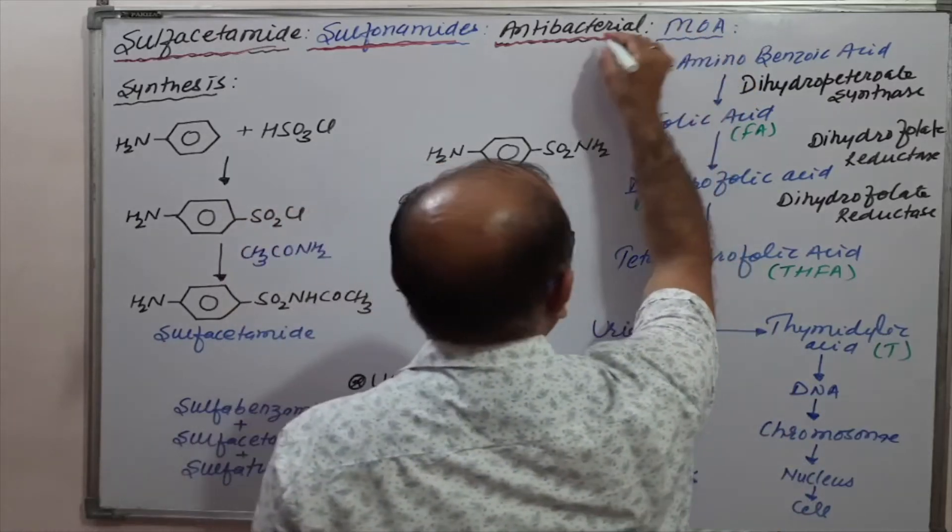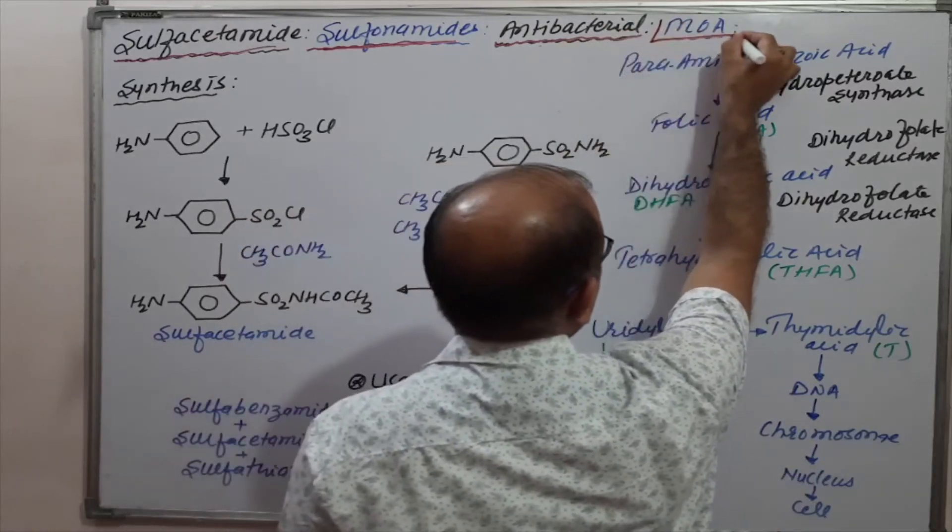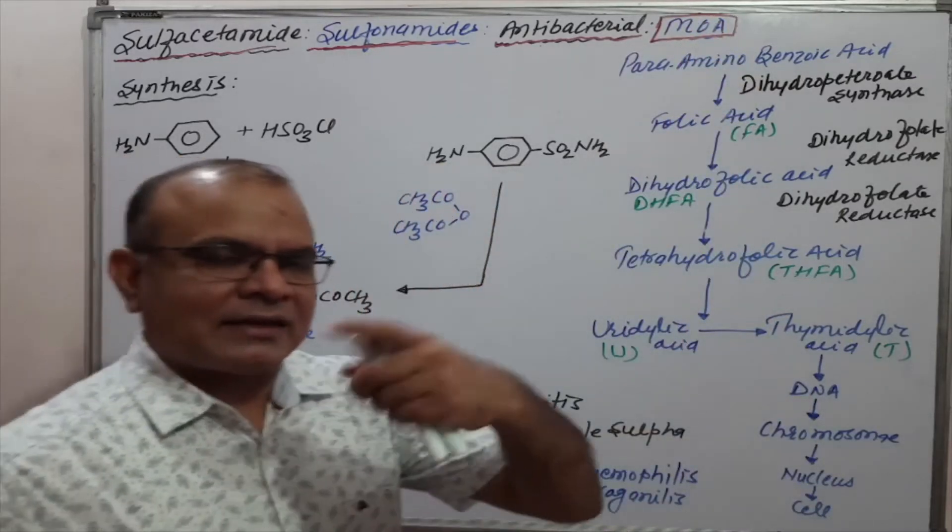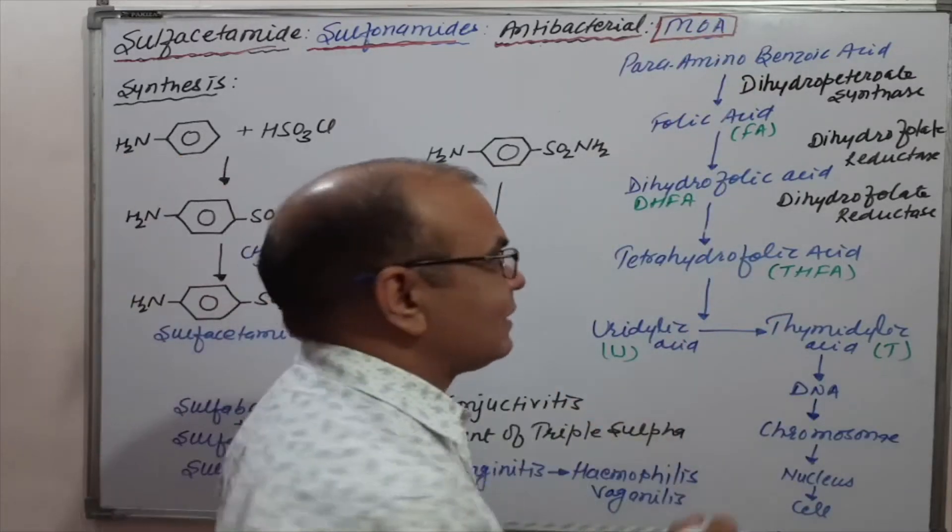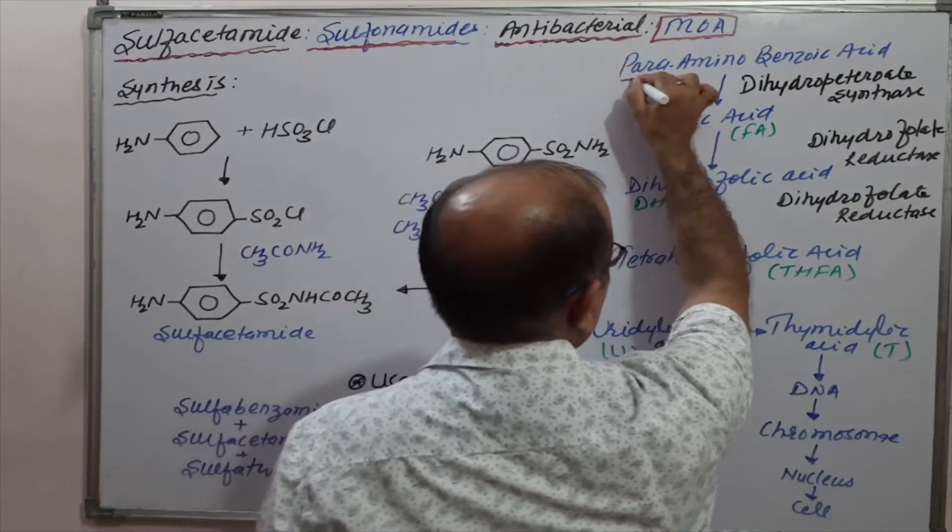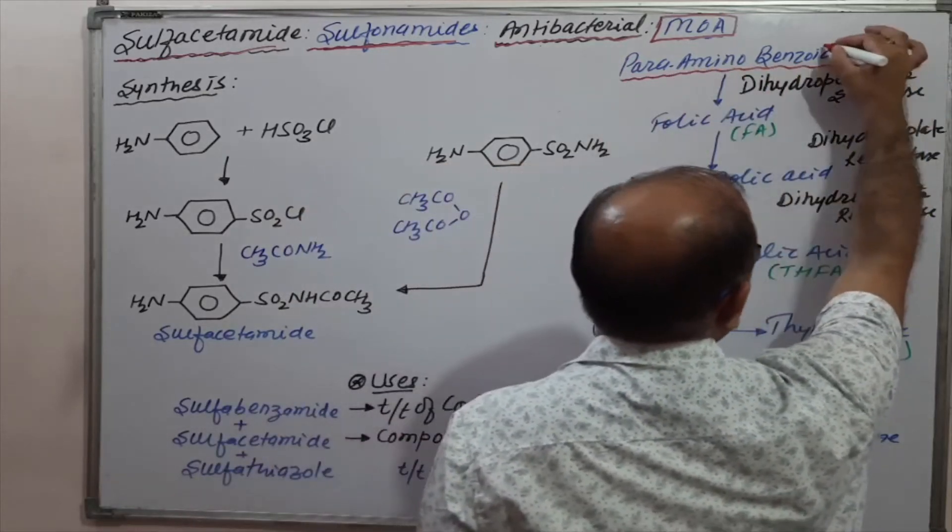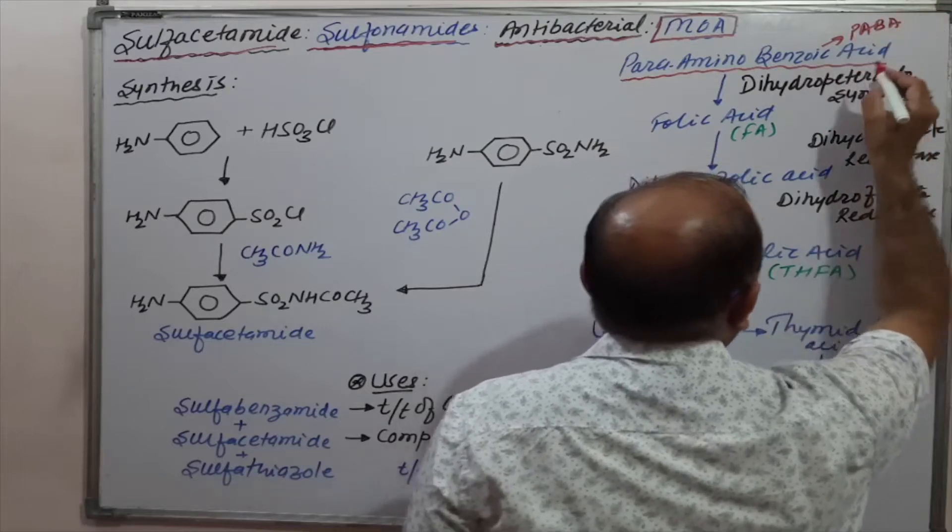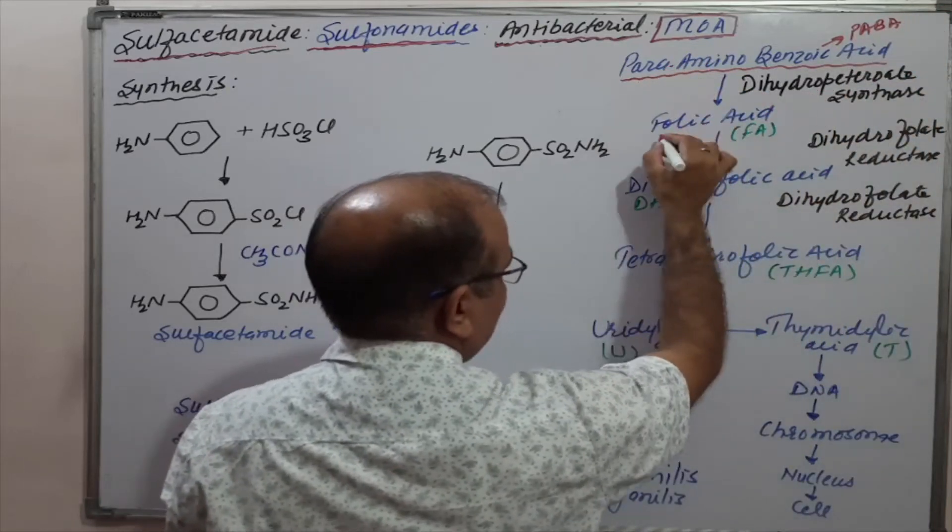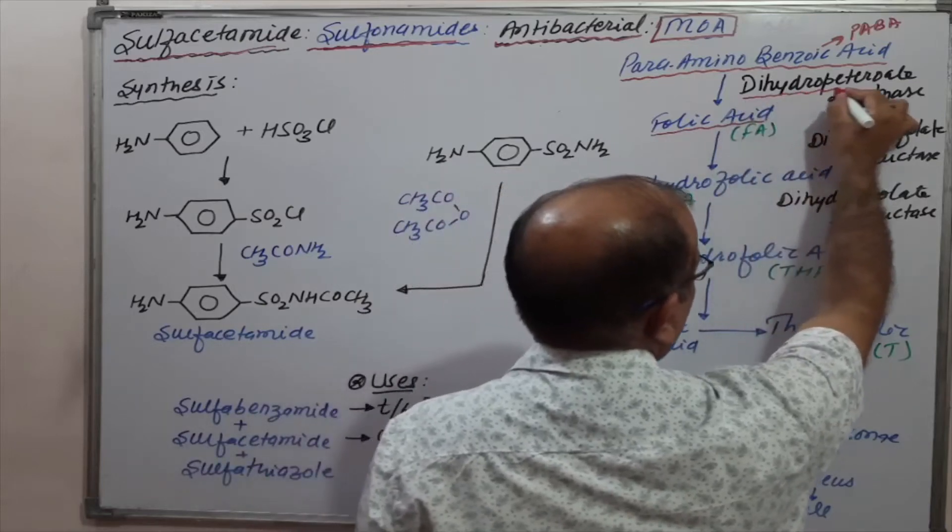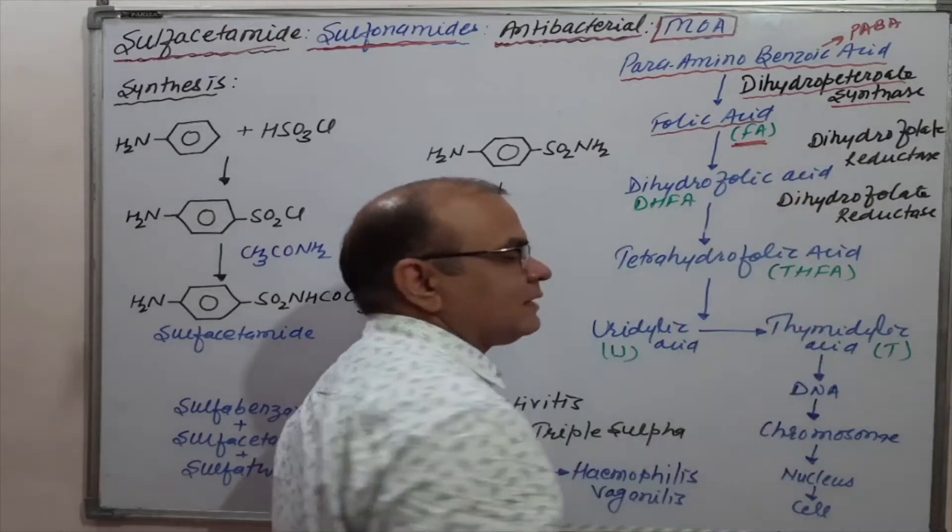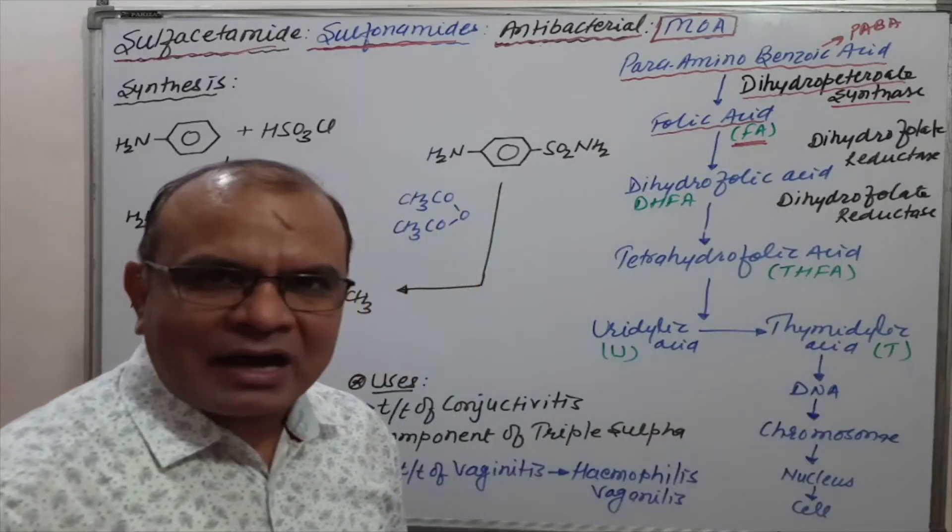Now come to how it is antibacterial, the mechanism of action. As we have discussed in trimethoprim or cotrimoxazole, para-aminobenzoic acid, also known as PABA, forms folic acid in presence of dihydropteroate synthase.